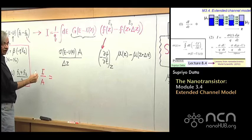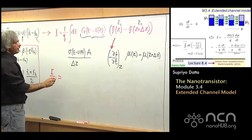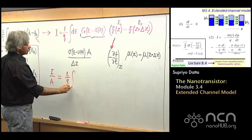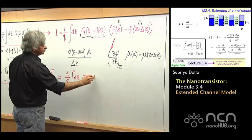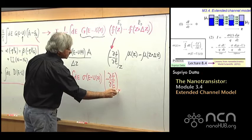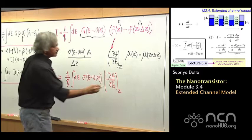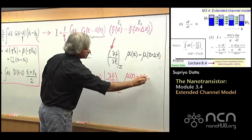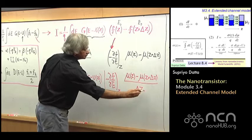If you take that, then you can write I divided by A — that's current per unit area, or in two dimensions current per unit width — and you'd have 1 over Q times the integral over dE of sigma(E minus U(Z)) times minus dF/dE at Z, times the quantity mu(Z) minus mu(Z plus delta Z) divided by delta Z.